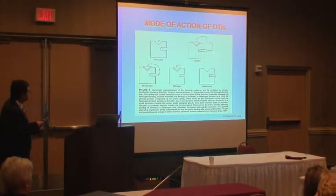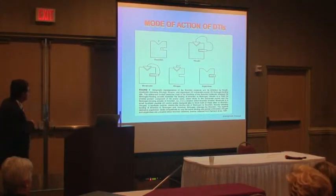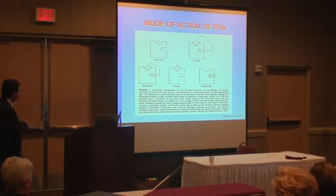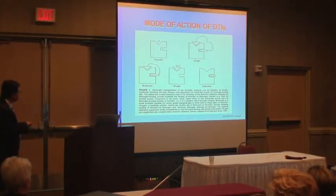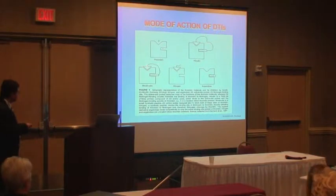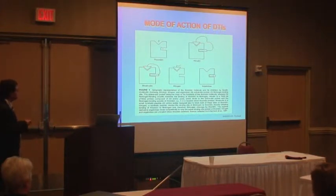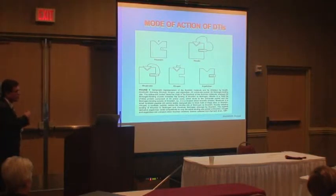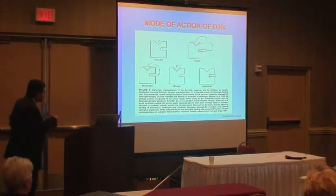Hirudin neutralizes thrombin, which is then unable to bind to fibrinogen and to clot it. Bivalirudin still blocks both sites, but with a much smaller size than hirudin — about three times smaller than hirudin.